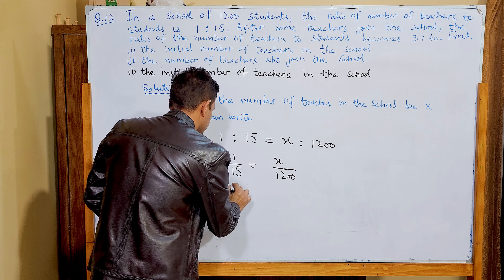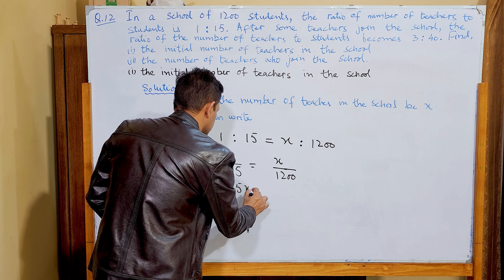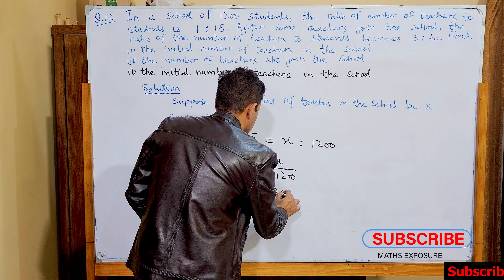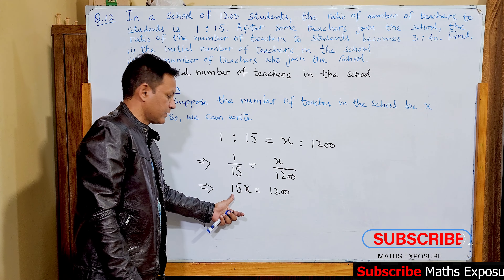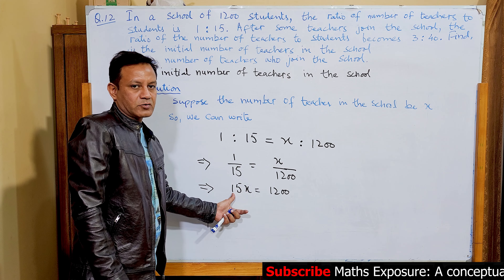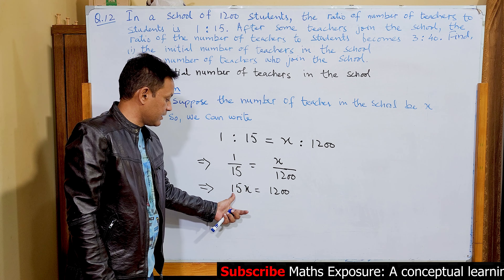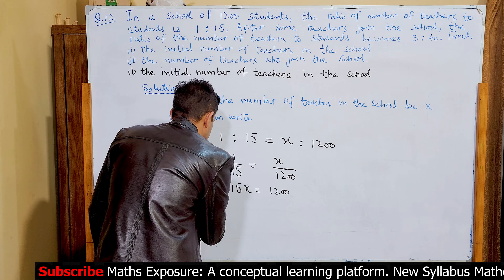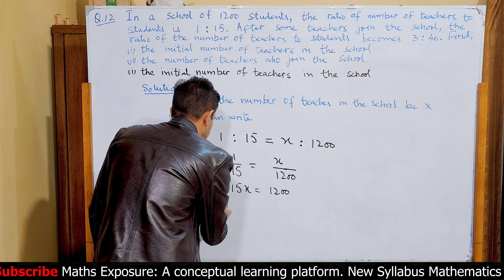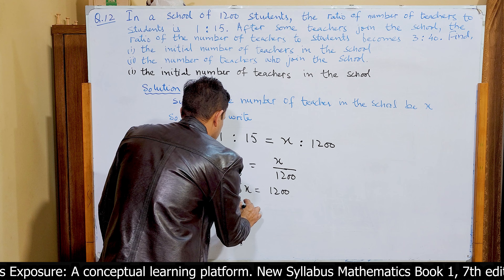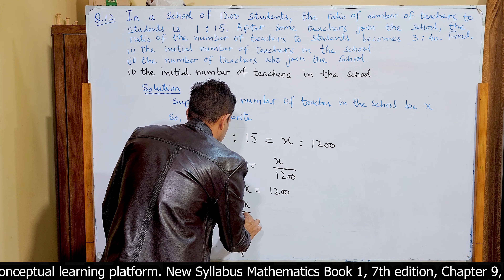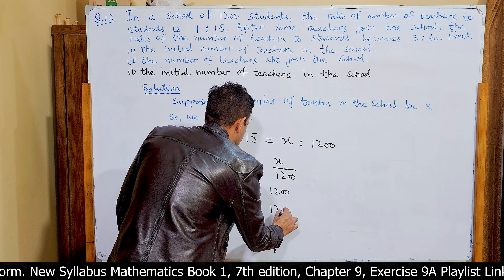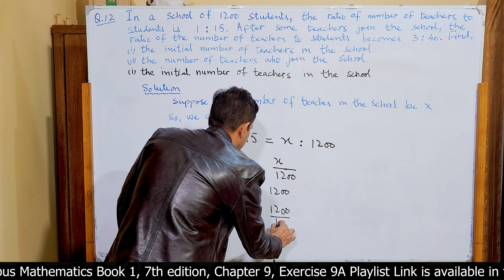Using the product of means equals product of extremes: 15x = 1200. Dividing both sides by 15: 15x/15 = 1200/15.